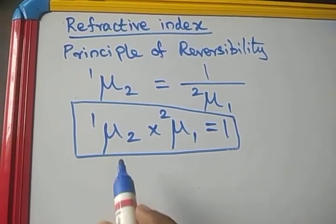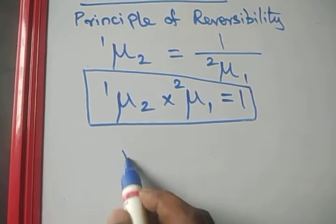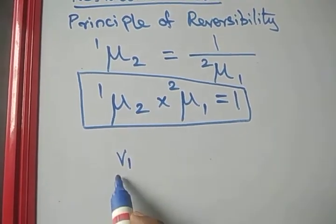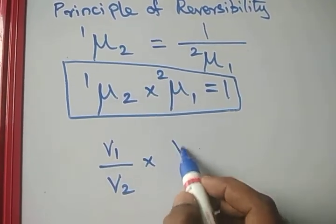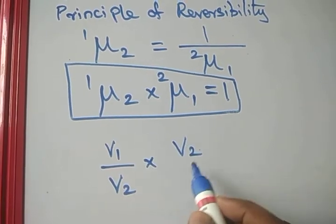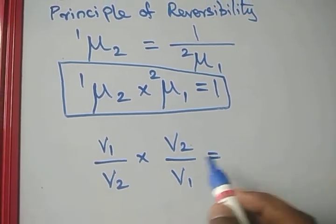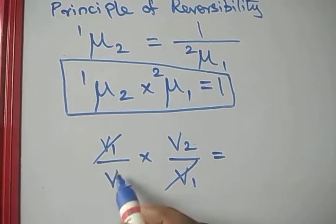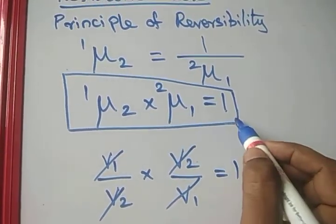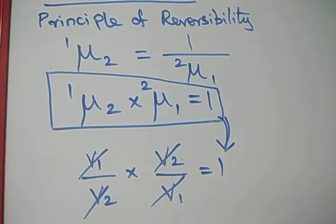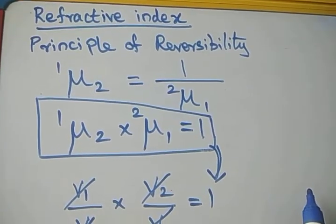How can we show this? The refractive index of the second medium with respect to the first has the medium in the numerator, and the medium in the denominator for the other. So V1 and V1 get cancelled, V2 and V2 get cancelled. Again we get 1 — hence it is proved. This is the principle of reversibility.